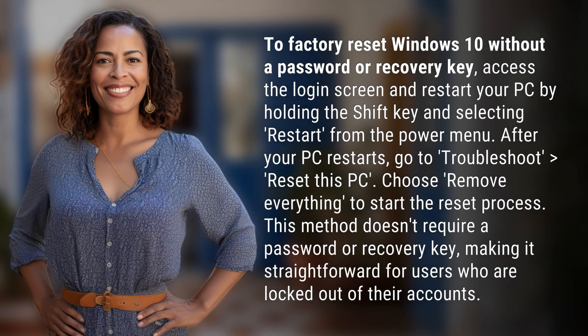To factory reset Windows 10 without a password or recovery key, access the login screen and restart your PC by holding the shift key and selecting restart from the power menu. After your PC restarts, go to Troubleshoot > Reset This PC. Choose Remove Everything to start the reset process.